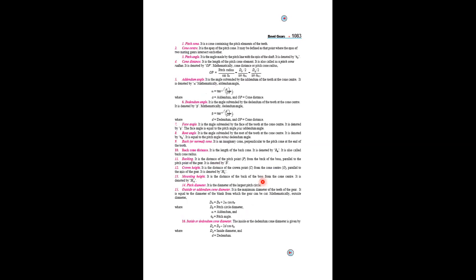Addendum angle — it is the angle subtended by the addendum of the tooth at the cone center. The addendum angle α equals tan⁻¹(a/OP). The dedendum angle β equals tan⁻¹(d/OP). Face angle — it is the angle subtended by the face of the tooth at the cone center. These are the terminologies you need to remember for the design of bevel gears.